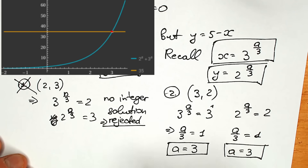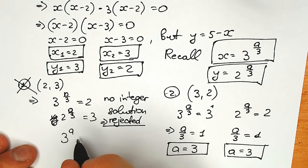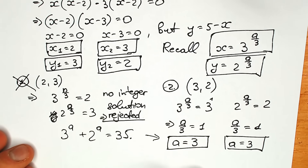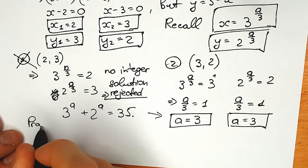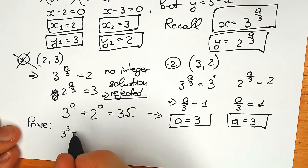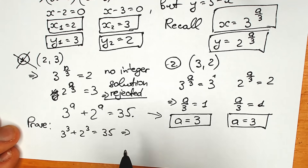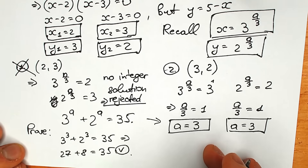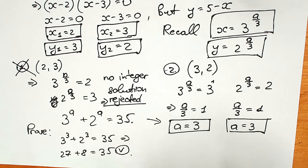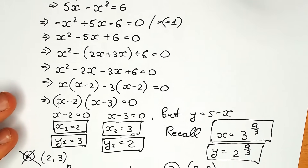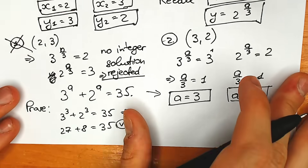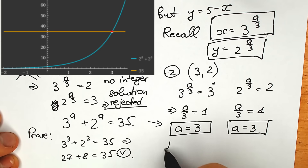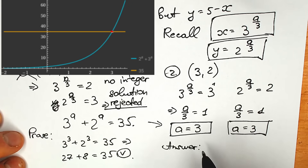Let's verify: 3 to the power 3 plus 2 to the power 3 = 27 + 8 = 35. Correct! As you can see, it's a really long solution step by step, but we got closer and closer to our answer. You can also see this from a geometric perspective with a graph showing the points of intersection.